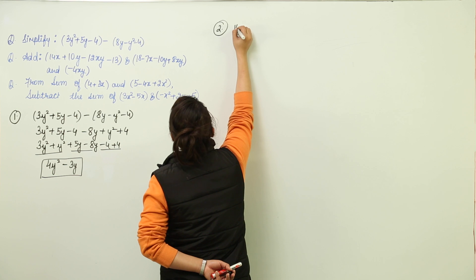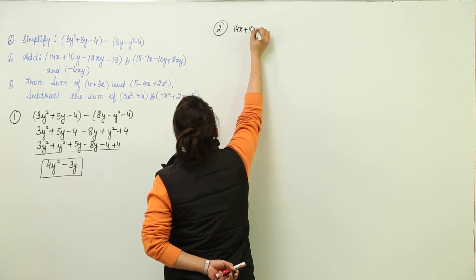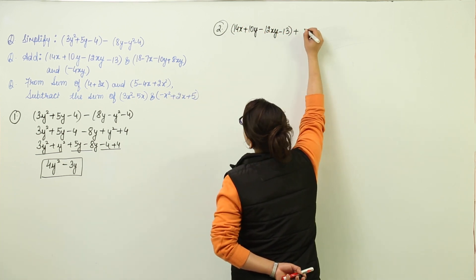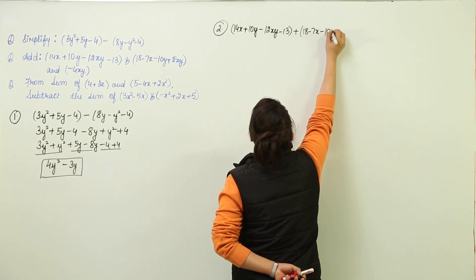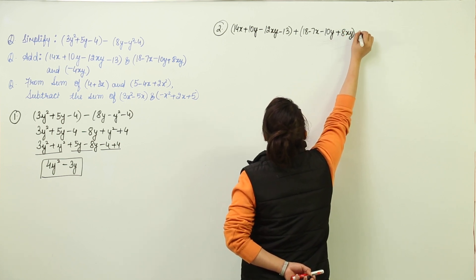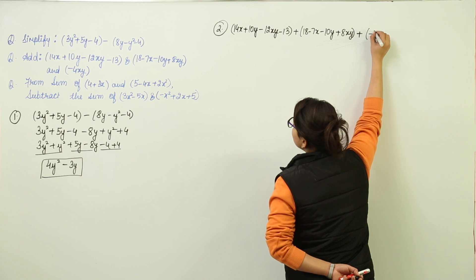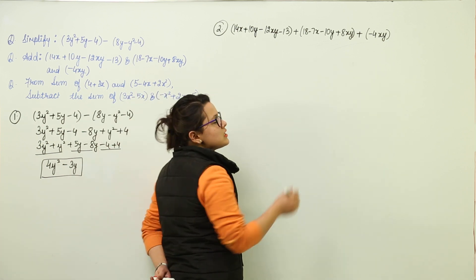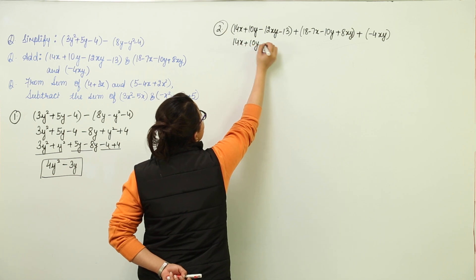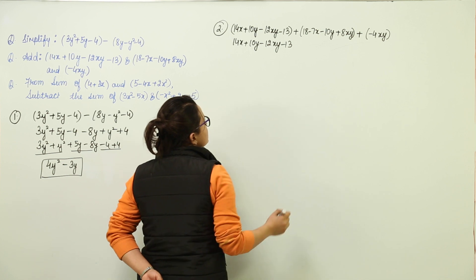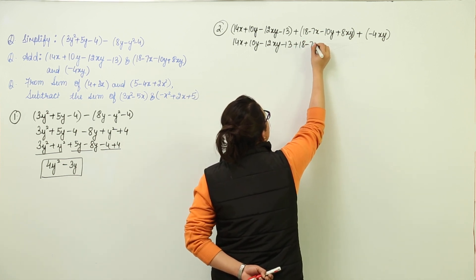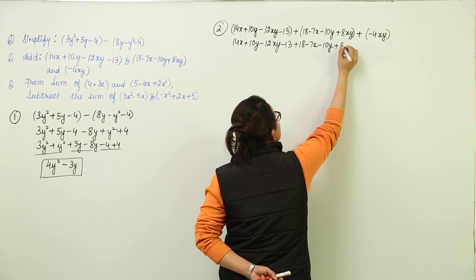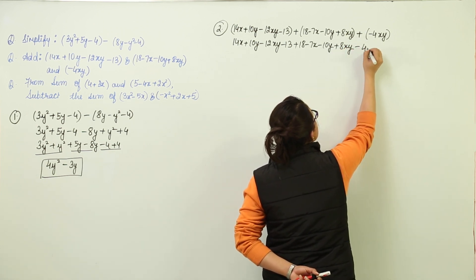We write all the expressions together: 14x plus 10y minus 12xy minus 13, plus 18 minus 7x minus 10y plus 8xy, plus the monomial minus 4xy. Now removing the brackets: plus and minus remains minus, plus and minus again remains minus, plus and plus remains plus, and the last bracket gives minus 4xy.